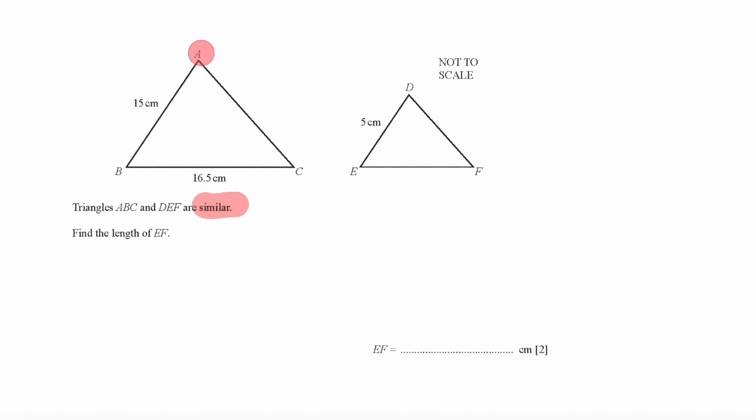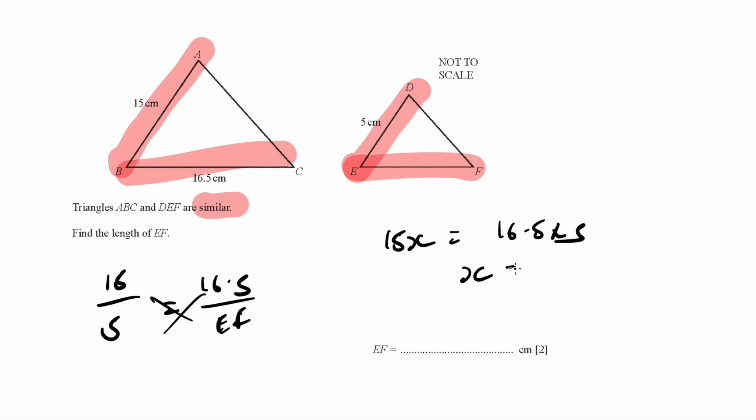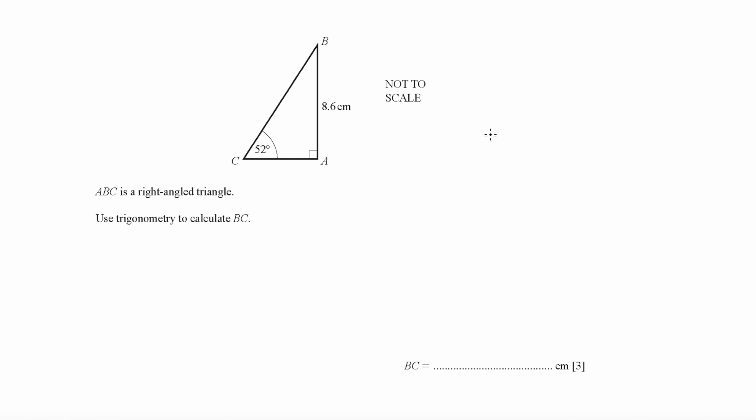This is a question on similar triangles. This side is similar to this side, hence we can equate them to each other: 15 over 5 equals, and this side is similar to this side, so therefore 16.5 equals EF. If you want to find EF, you have to cross multiply, so 15x equals 16.5 times 5. x will equal 5.5, and therefore your value of EF is 5.5.